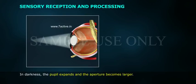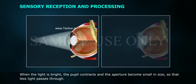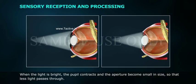In darkness, the pupil expands and the aperture becomes larger, allowing the maximum amount of light to pass through. When the light is bright, the pupil contracts and the aperture becomes small in size, so that less light passes through.